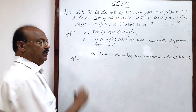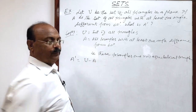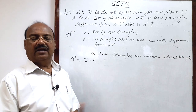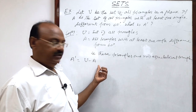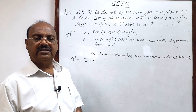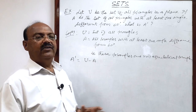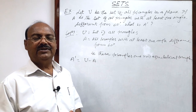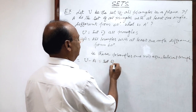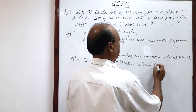You know how to get A complement. A complement is the universal set minus set A. The universal set consists of all kinds of triangles, and A is the set of triangles which are not equilateral triangles. If set A is removed from the universal set, we will get a set which has all equilateral triangles. So this is the set of all equilateral triangles.